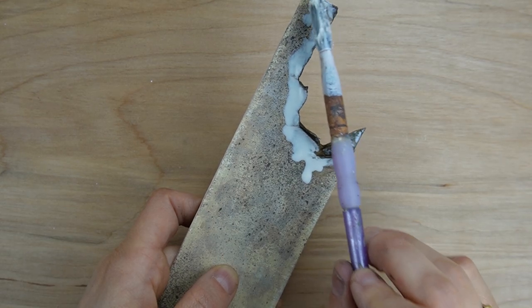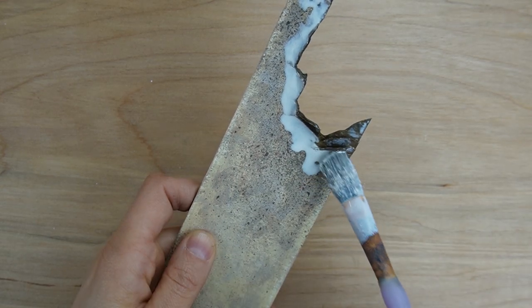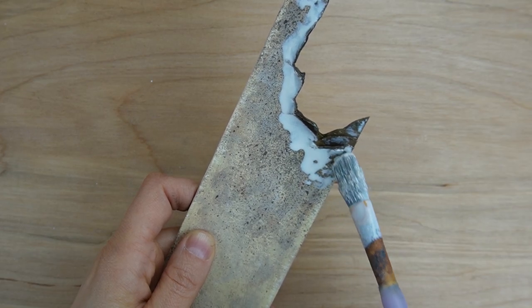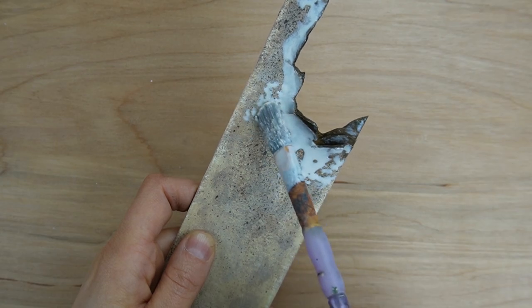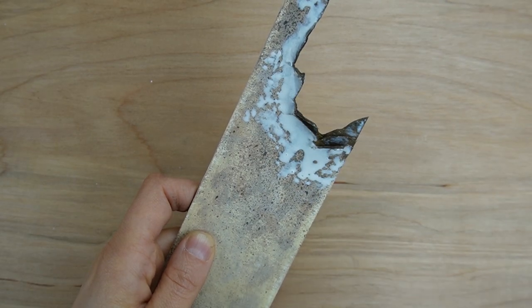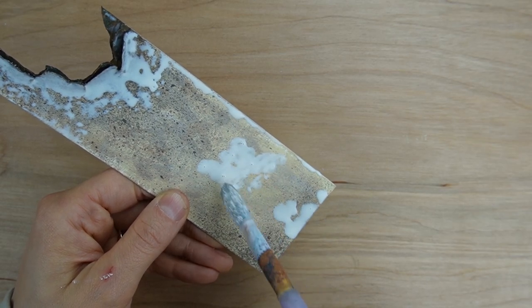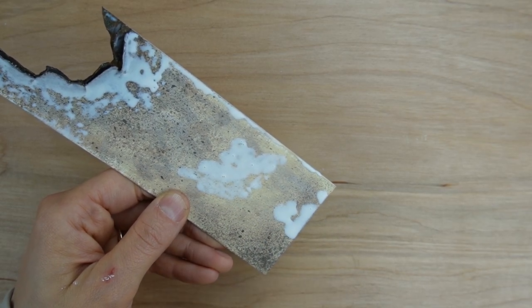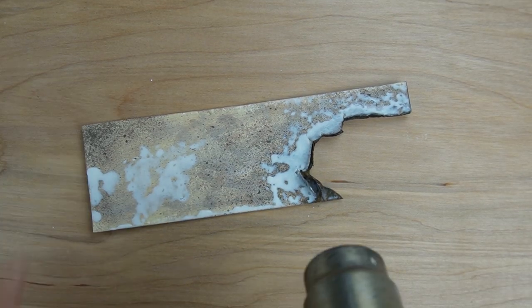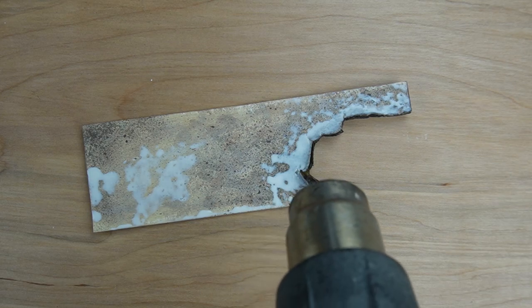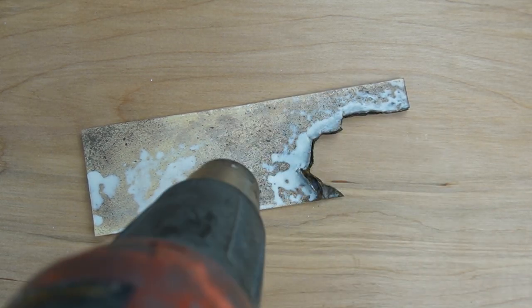I can remove the latex completely to expose the paint underneath, or I can remove it partially to make it look like peeling and flaking paint. I show several different techniques for using this product in my peeling paint tutorial video, so I'll link that video in the description below. The latex takes about 15 minutes to dry, but to speed it along I'm using my heat gun. When my latex dries it goes from white to clear.